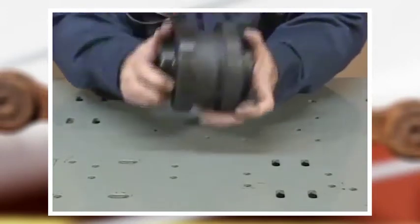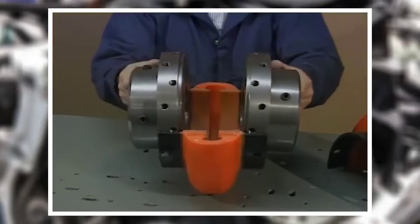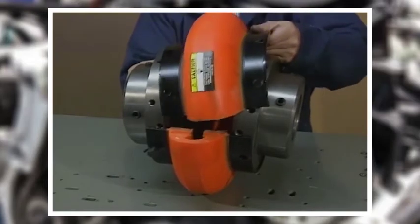Another style of flexible coupling is referred to as a rubber tire coupling. Shafts are connected to both sides of the flexible tire, and all the flexing occurs in the tire itself.